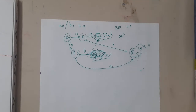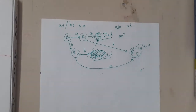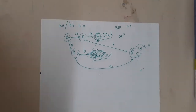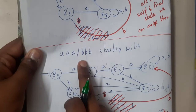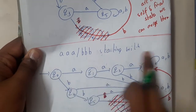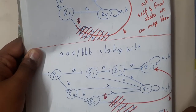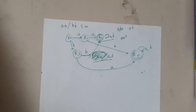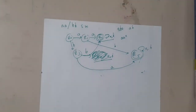I request everyone to try starting with triple 'aaa' and triple 'bbb' — you will get a clear idea if you try it. Now let me go through one more thing: ending with 'aa' or 'bb', and substring 'aabb'.